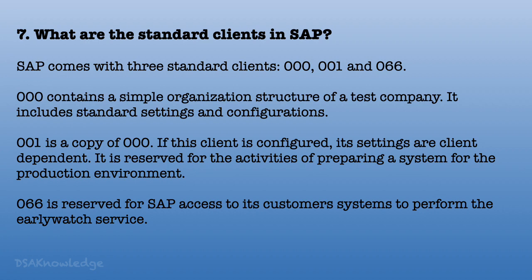What are the standard clients in SAP? SAP comes with three standard clients: 000, 001, and 066. Client 000 contains a simple organization structure of a test company and includes standard settings and configurations. Client 001 is a copy of 000; if configured, its settings are client-dependent and it is reserved for preparing a system for the production environment. Client 066 is reserved for SAP access to its customers' systems to perform the Early Watch service.